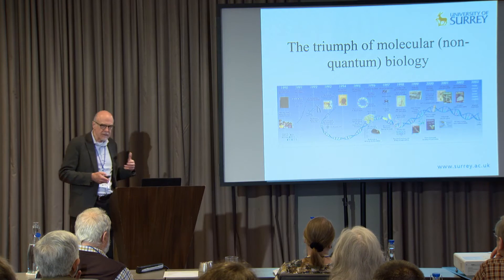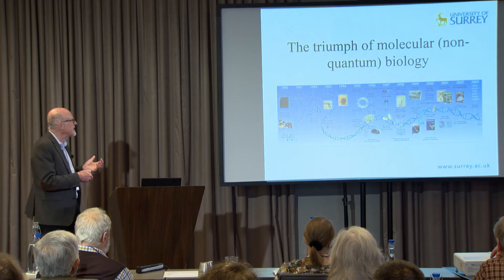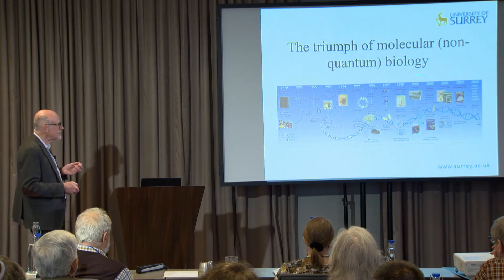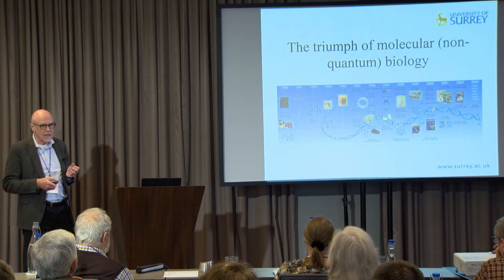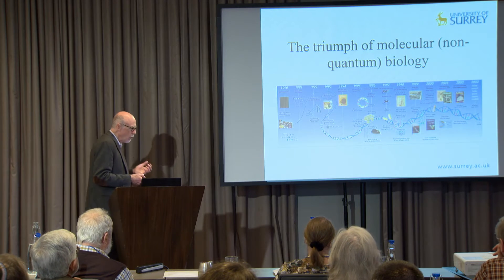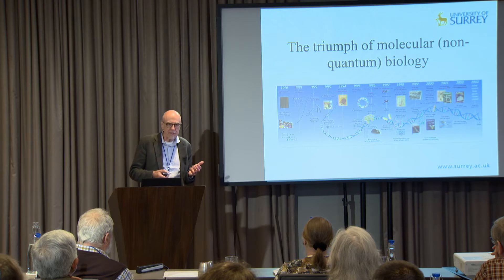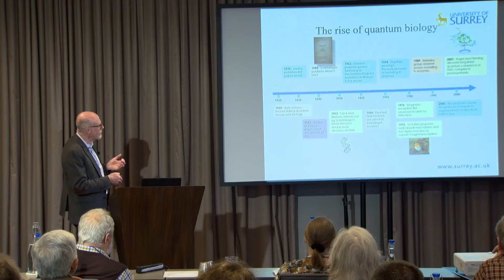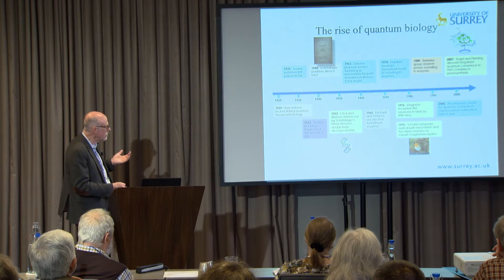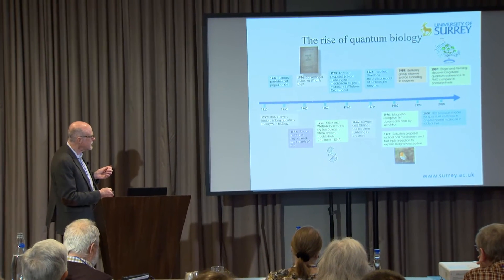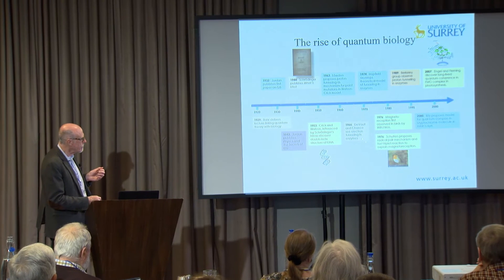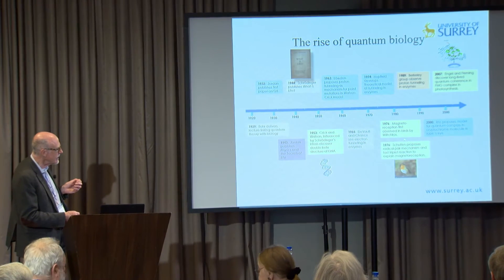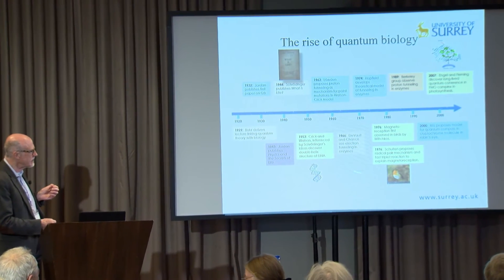By and large, when molecular biology became the dominant ethos in biology, it forgot about Schrödinger's claim about quantum mechanics - and it did just fine without it. All the great advances in molecular biology were done with ball-and-stick models of molecules. Then in the 1970s, DeVault and Chance showed that electron tunneling can take place in enzymes, and we now have quantum biology emerging from there.